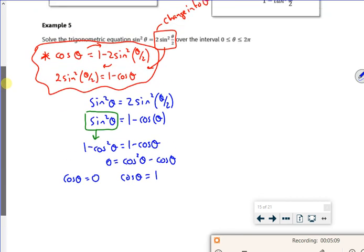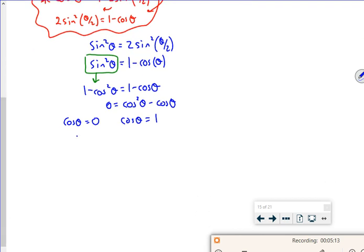So I'm still in radians. I'm doing it over 0 to 2π. So I'd have theta comes out to π by 2. I'd look on the graph, I get π by 2 and I get 3π by 2. Then for cos theta is 1, I get theta out of 0. Then if I look on the graph, I'd get 0 and 2π.